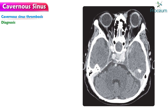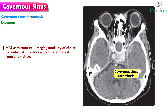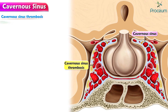Here's how diagnosis works. Cavernous sinus thrombosis is a clinical diagnosis. MRI with contrast is the imaging modality of choice to confirm its presence and to differentiate it from alternatives such as orbital cellulitis, which may have a similar clinical presentation. Management of cavernous sinus thrombosis is mainly done with the use of antimicrobials and antithrombotic agents.